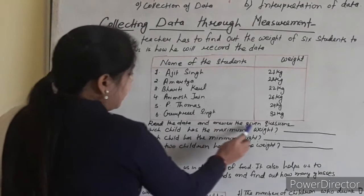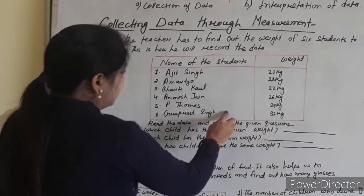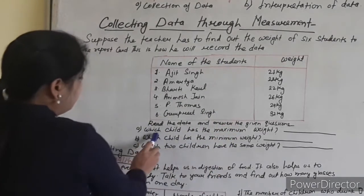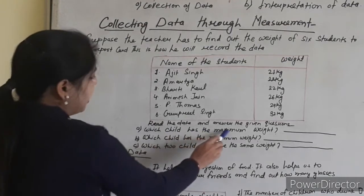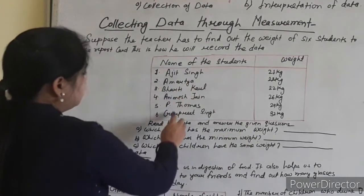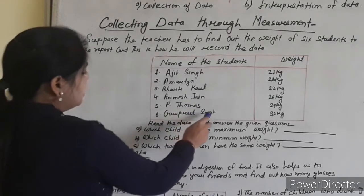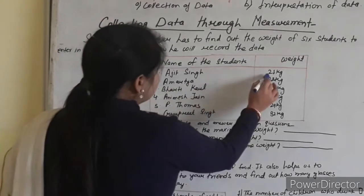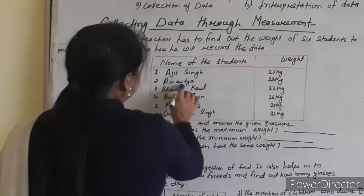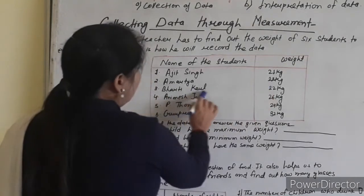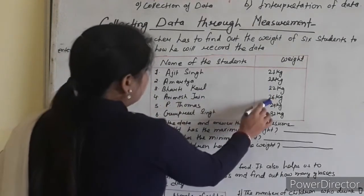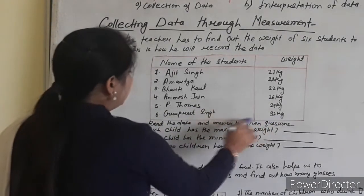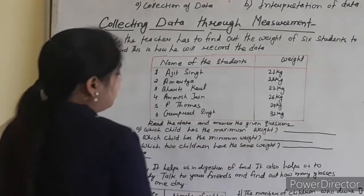Read the data and answer the given questions. See the data carefully. Question A: which child has the maximum weight? The weights are — Adit Singh has 21 kg, Amartya has 22 kg, Harki Kaur has 22 kg, Anina Zen is 26 kg, Thomas is 29 kg, and Burkitz Singh is 32 kg. That means Burkitz Singh has the maximum weight.